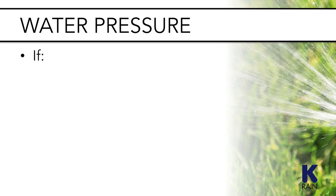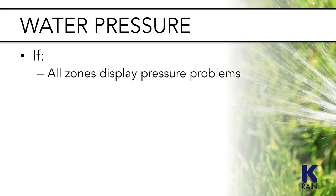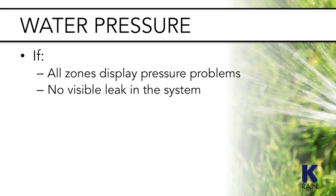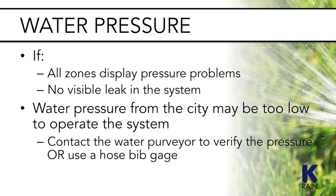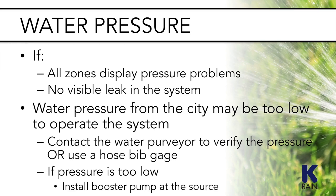If all zones on the system display pressure problems and there is no visible leak, the water pressure from the city may be too low to operate the system. Contact the water purveyor to verify the water pressure on site, or use a hose bib gauge. If it is indeed too low, you can install a booster pump at the source to create the additional pressure necessary to operate the system.